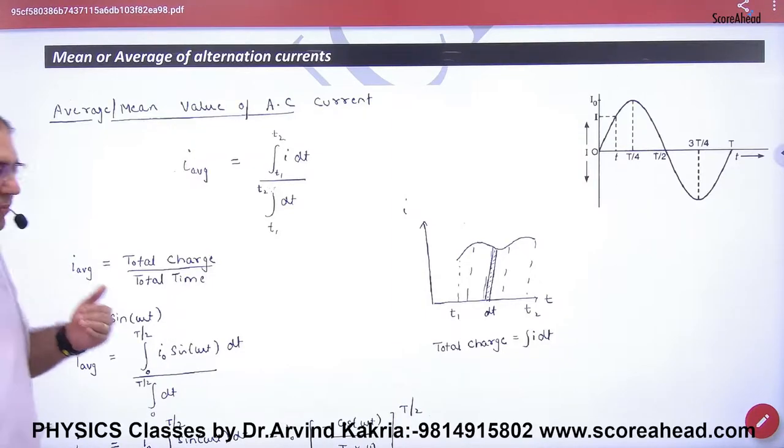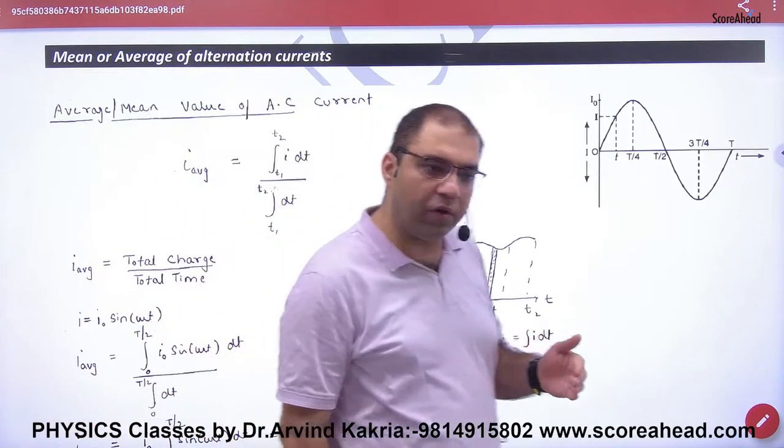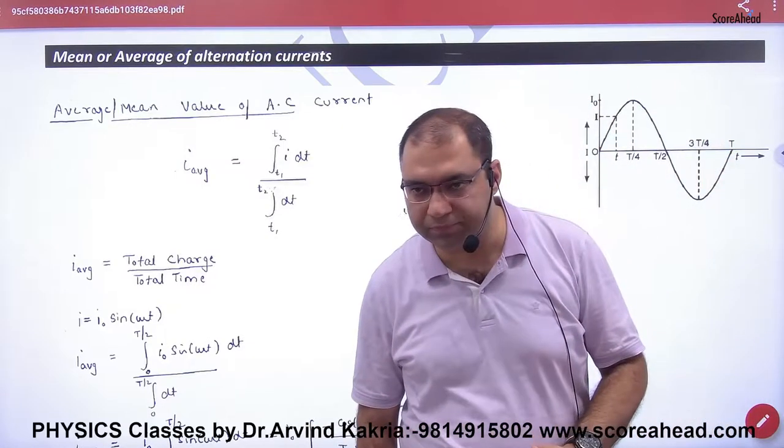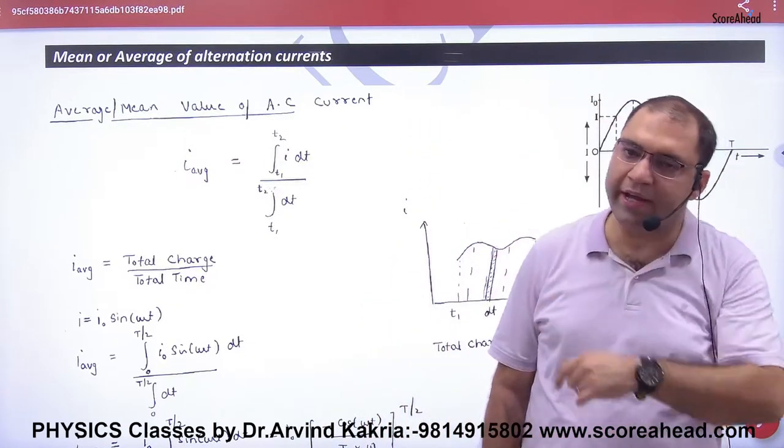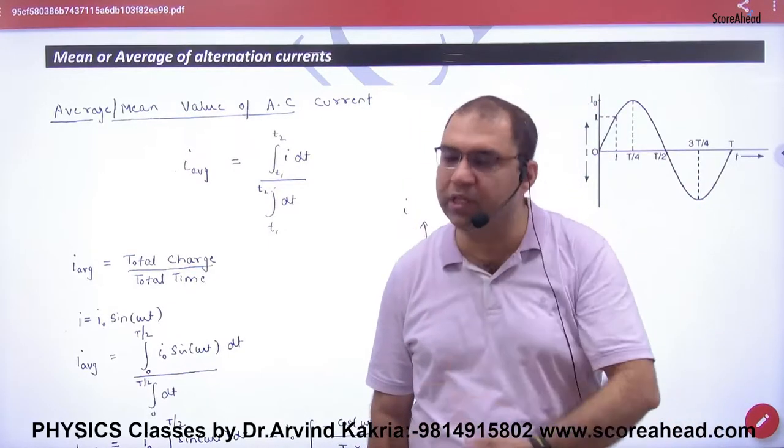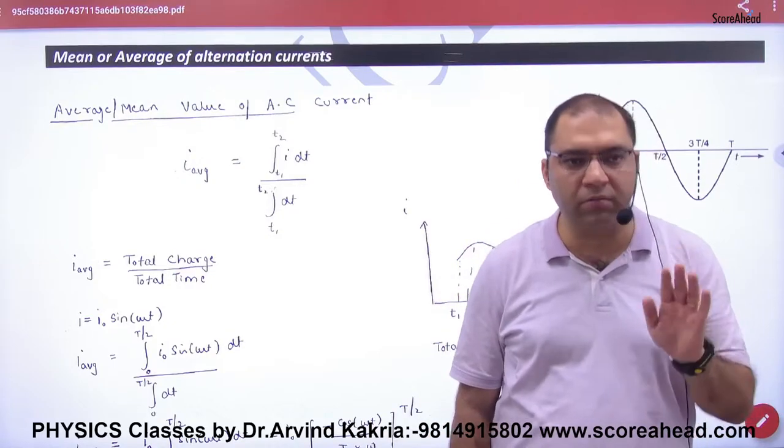The topic name is mean, the average value of alternating current. Suppose a student asked me, which wire is going on in this wire? I said, my house is going on in alternating current. He said, what is its value? How much is its value? I said, its maximum value is 3 ampere.